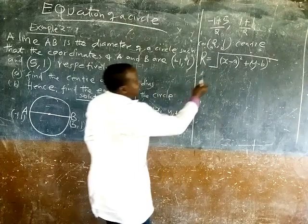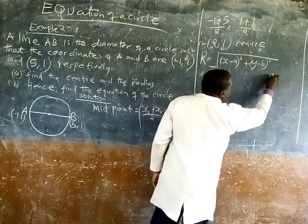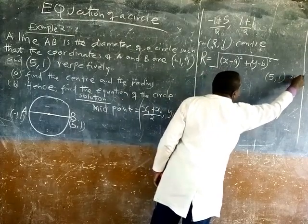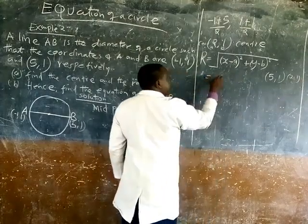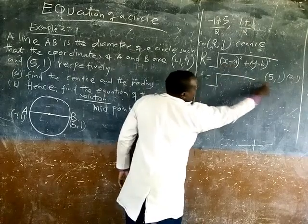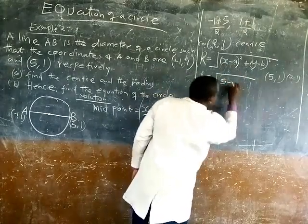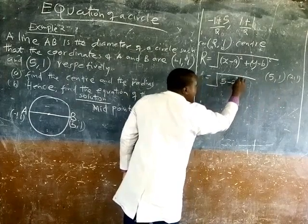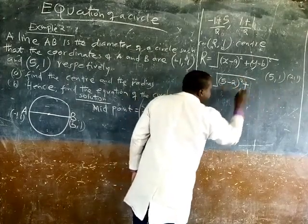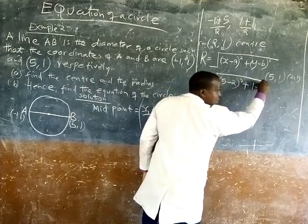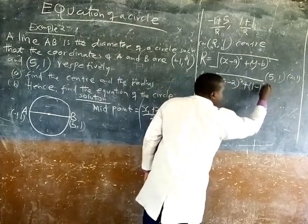So let me take the one which is 5, 5 and 1. And my center is 2, 1. So now I will replace here. So this will be X is 5 minus the center will be 2, square, plus 1 minus 1 squared.